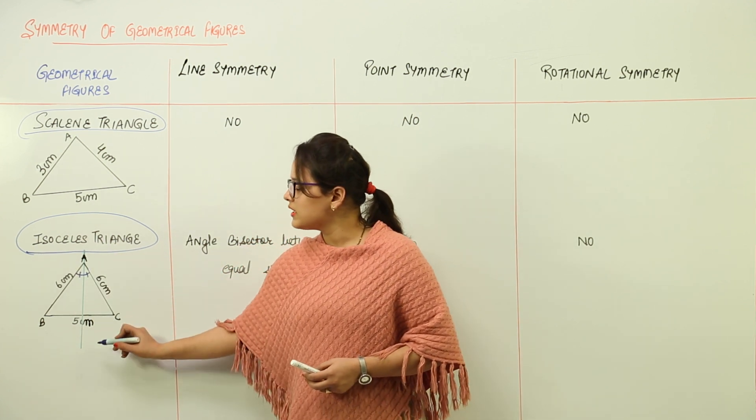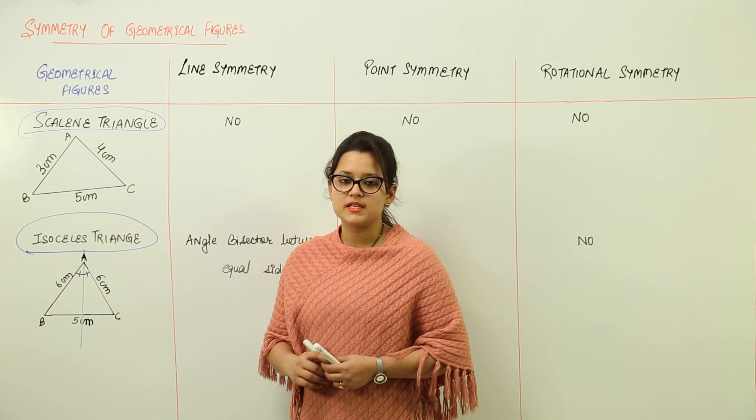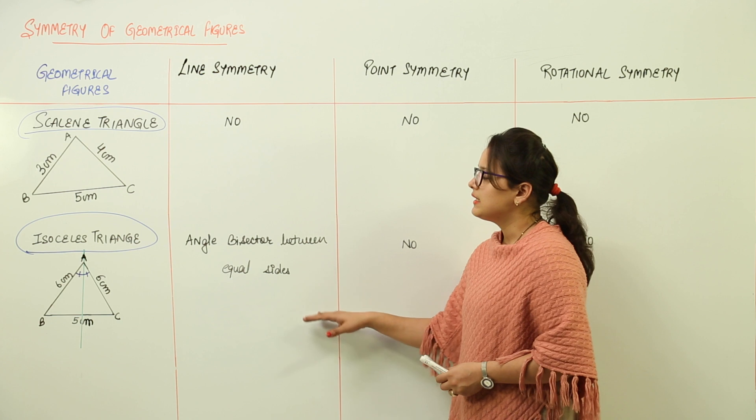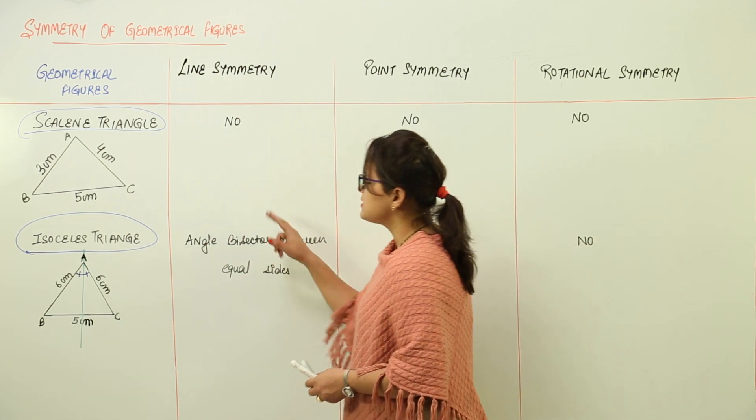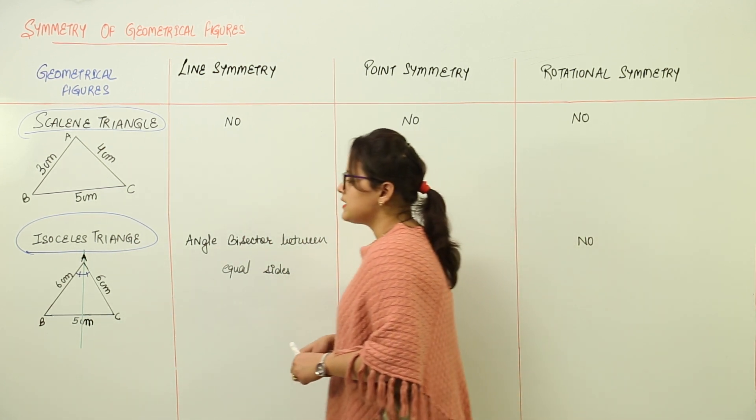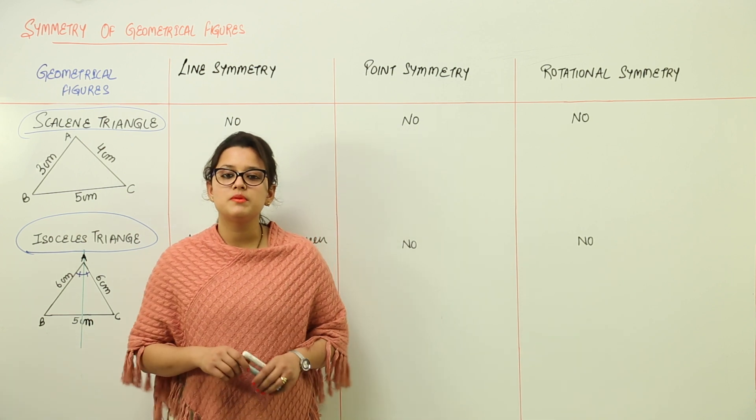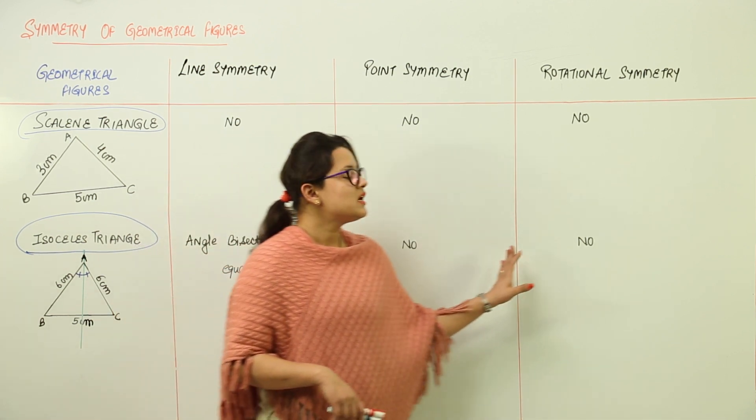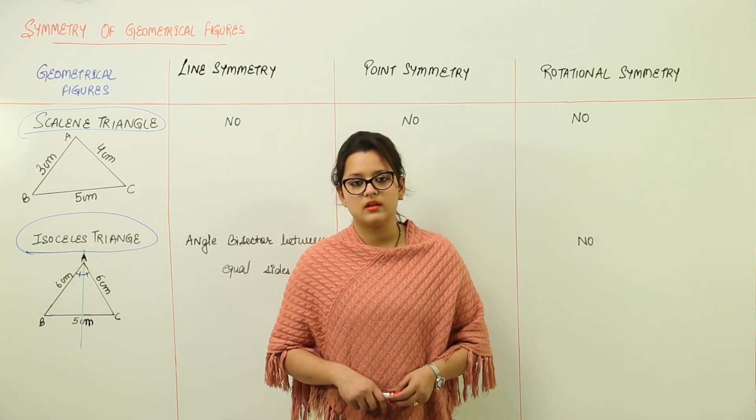So the green line over here is showing you the angle bisector for this isosceles triangle. This green line shows that isosceles triangle has line symmetry as its angle bisector, and that angle has to be between the two equal sides. We have no point symmetry and no rotational symmetry for isosceles triangles.